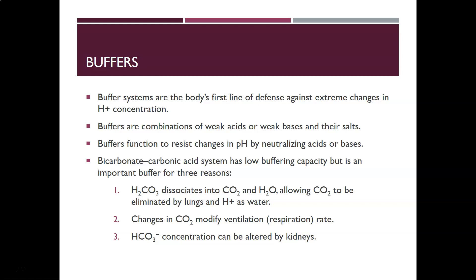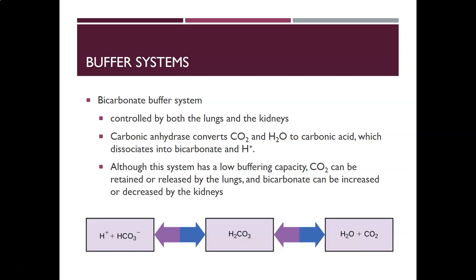Third, the bicarbonate concentration can be altered by the kidneys. Of the four buffer systems, the bicarbonate-carbonic acid buffer system is the most important and is controlled by both the lungs and kidneys. Carbonic anhydrase is the enzyme that converts CO2 and water into carbonic acid (H2CO3), which then dissociates into bicarbonate (HCO3⁻) and hydrogen ions. The CO2 end of the equation is the respiratory end controlled by the lungs, and the bicarbonate end is the metabolic end controlled by the kidneys.